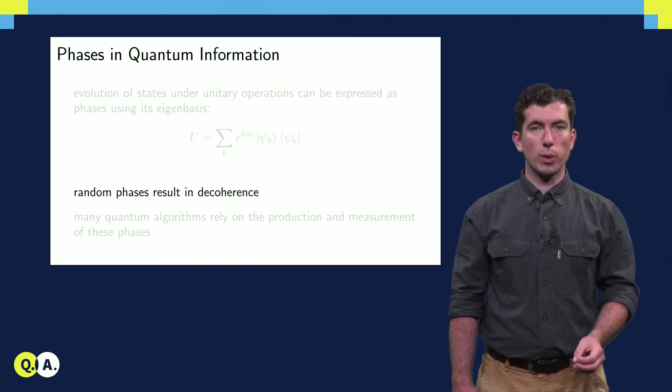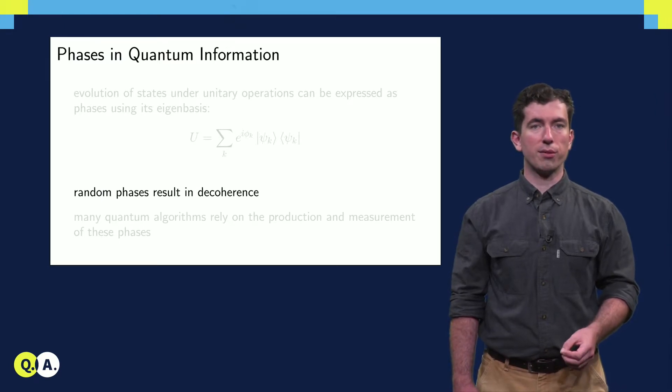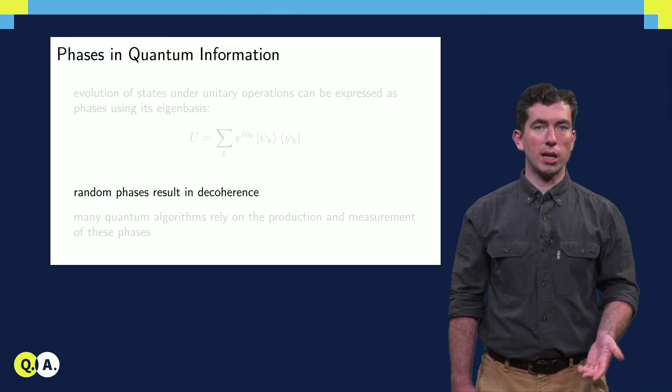If a phase is randomly applied to some of the components of a quantum state, this decoheres the quantum state, so keeping track of phases is important even at the physical level before we discuss any quantum algorithm.